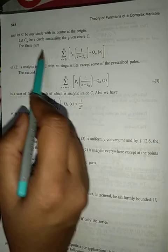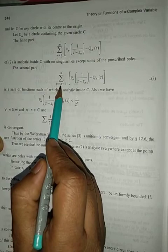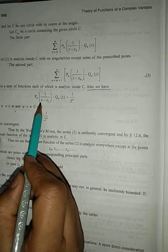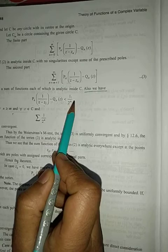Now consider the series Σ[pₙ(1/(z-zₙ)) - qₙ] and |z| < 1/2ⁿ as we have considered in the last page.